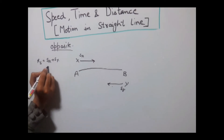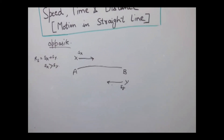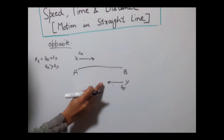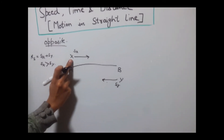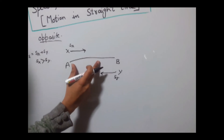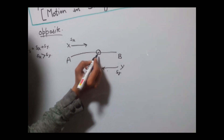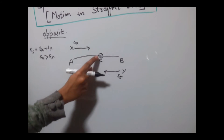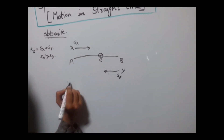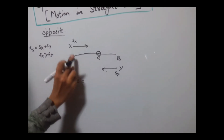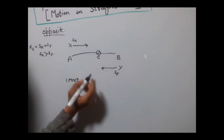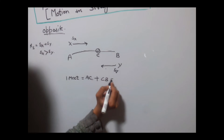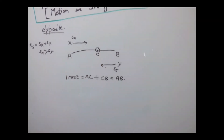Suppose speed of X is greater than speed of Y, so X will cover a larger distance in comparison with Y. They will meet at some point, say point C. The distance covered by both of them at their first meet would be distance covered by X plus distance covered by Y, that is AC plus CB, which equals AB — the complete distance D.